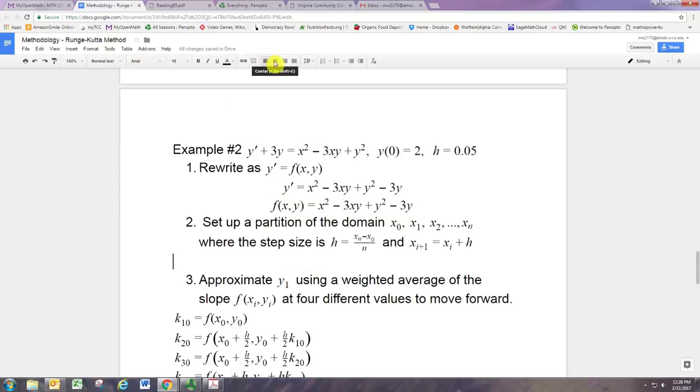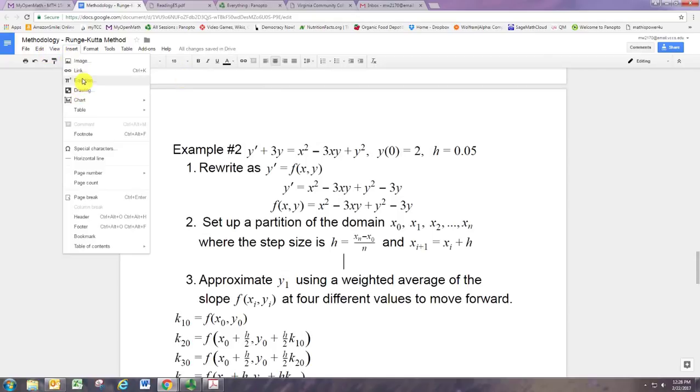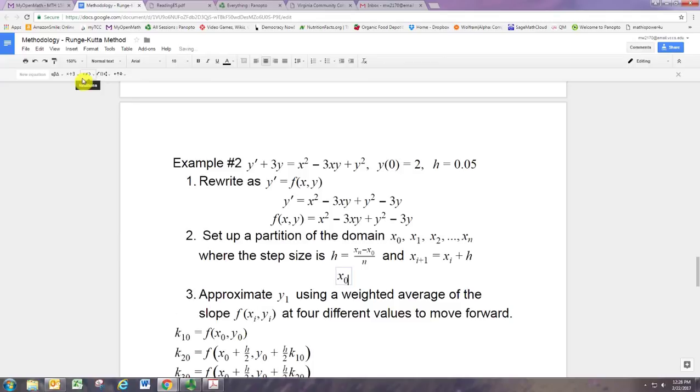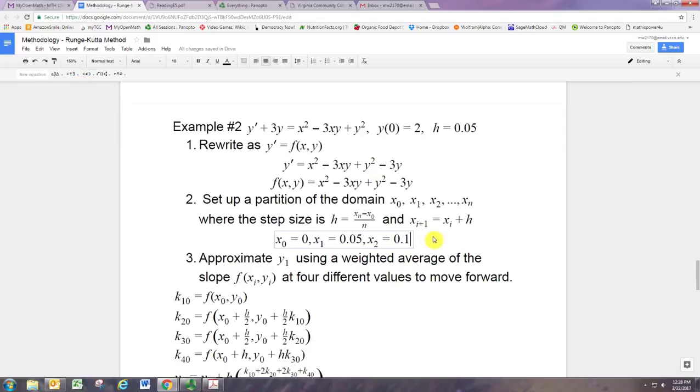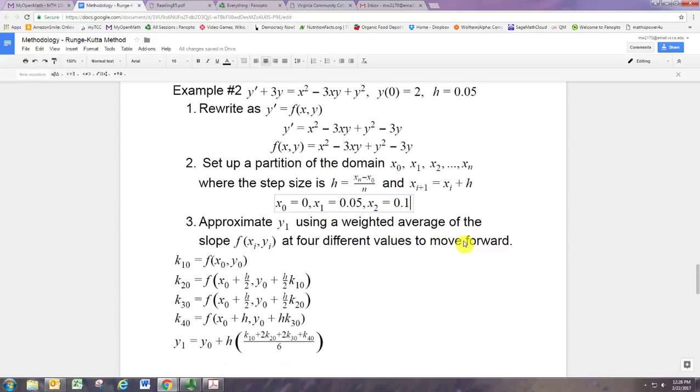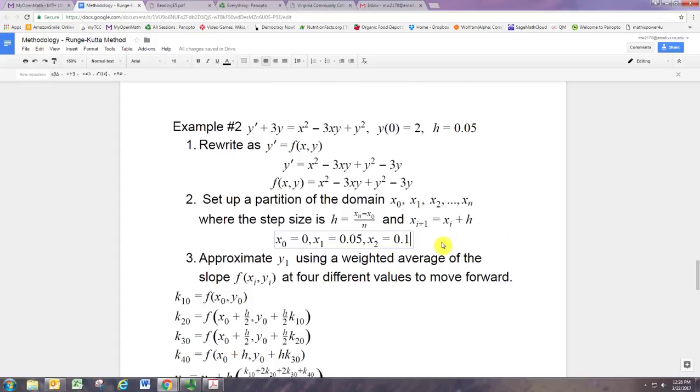We're going to use the same step size because we are going to be comparing to the improved Euler's method. So we're starting at 0 and then going in steps of 0.05. And we'll do two steps and then switch over to technology. There's the indexing of the first three x values. So we know y0 is 2 and then we want to figure out what y1 is and what y2 is.